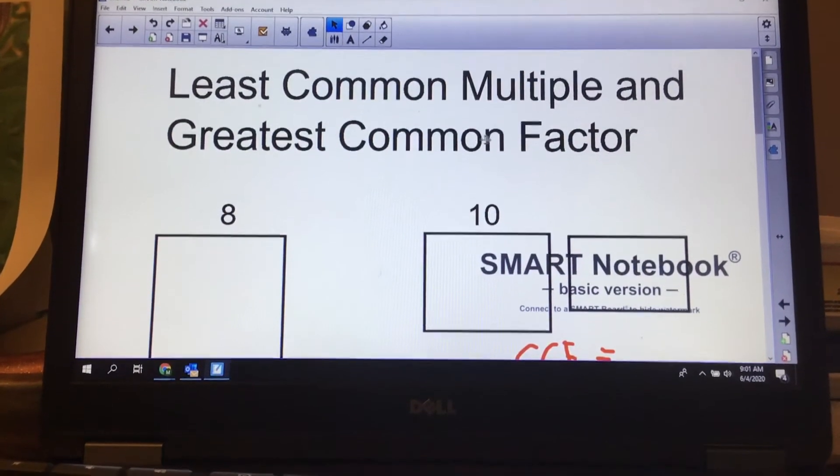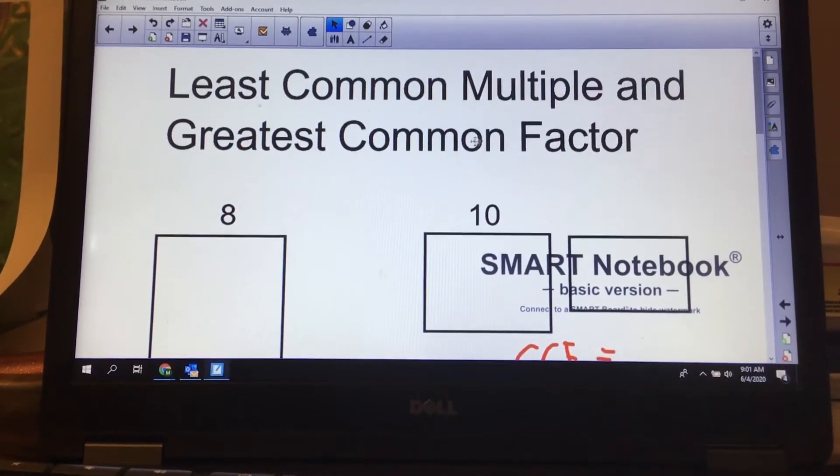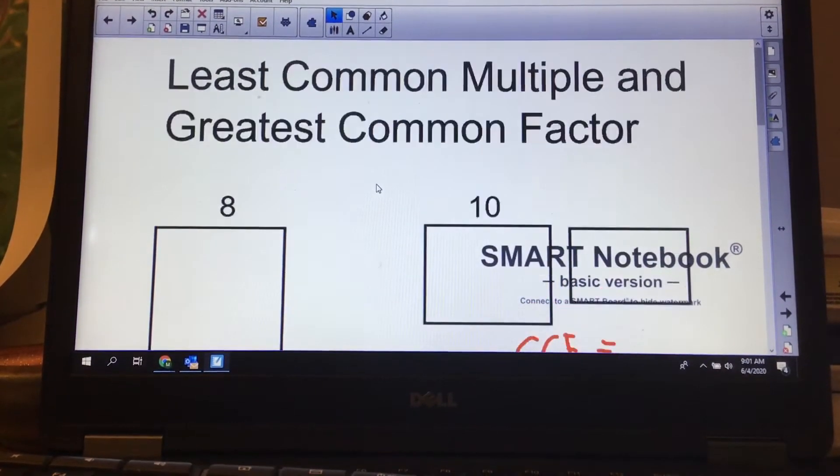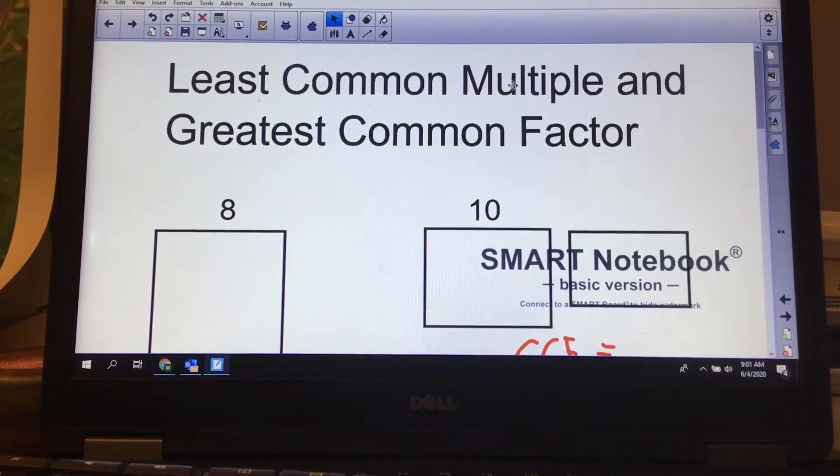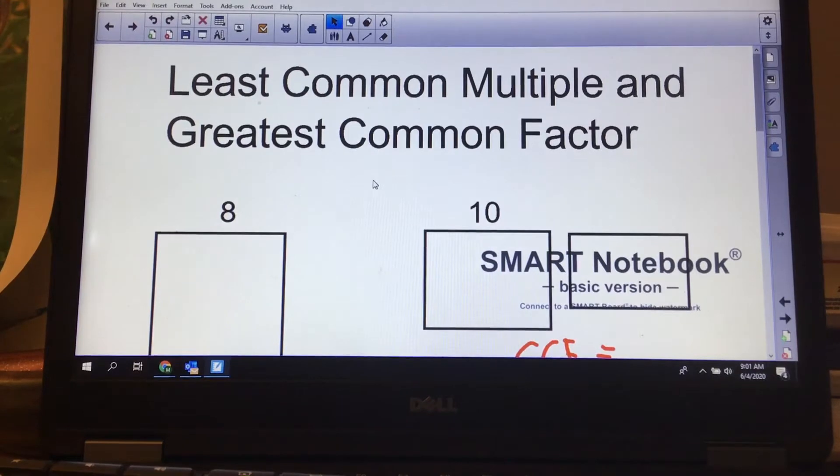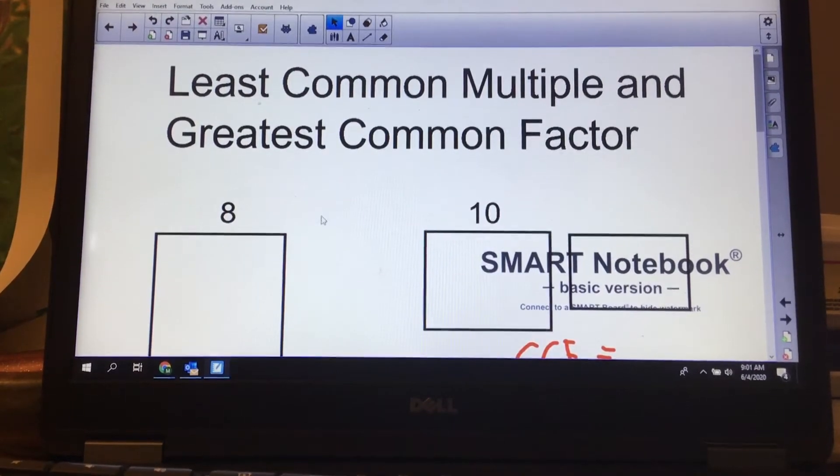We're going to continue from prime factorization to do least common multiple and greatest common factor. So we're going to start out. If we're looking for the least common multiple and greatest common factor, the two things I think you've been doing since about grade five or six.